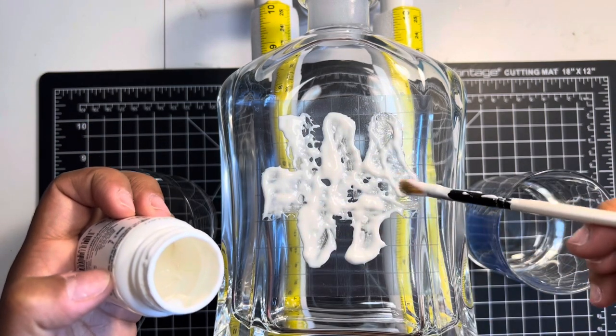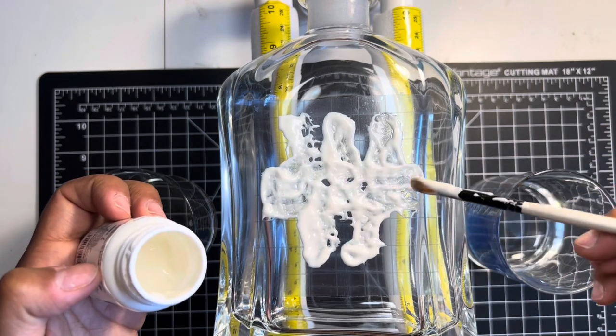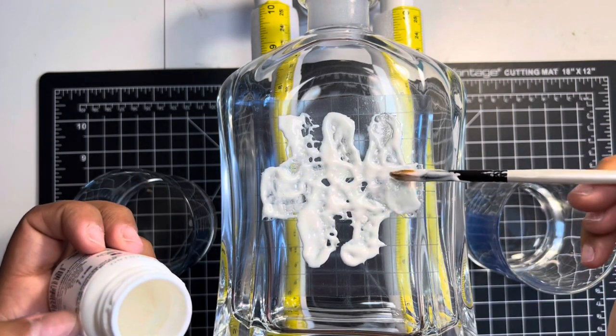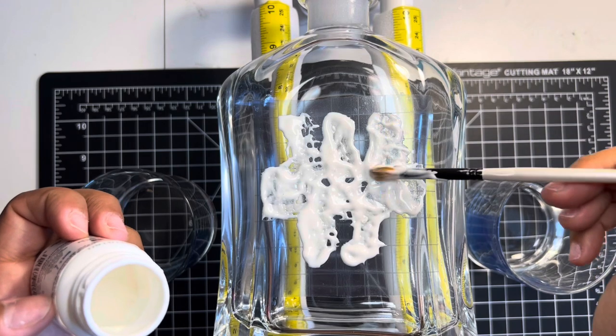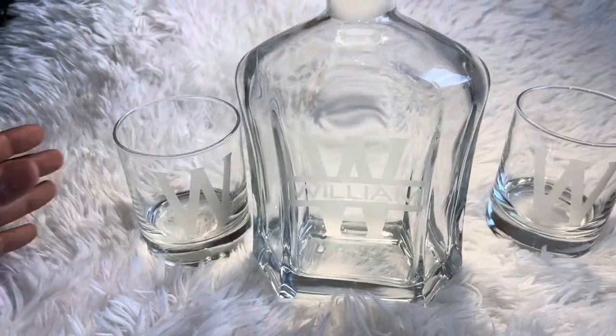I honestly think the more the merrier in this type of situation because you don't want any lighter spots on your design than other spots. So I like to just make sure that I gunk it up on there, and that way I can just ensure that it comes out good.